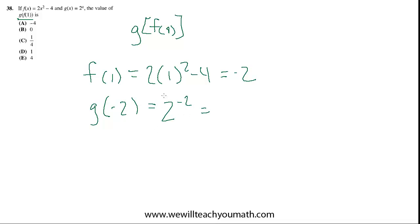Anytime you raise a number to a negative exponent, that's 1 over 2 to the same positive exponent, which is 1 over 2 squared, which equals 1 over 4. And c is the best choice.